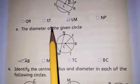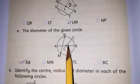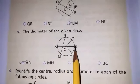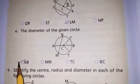E: The diameter of the given circle is what? The diameter of the circle is A and B. So take A and B.